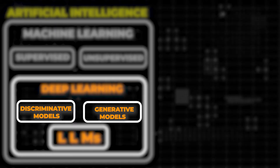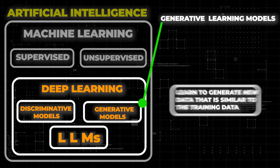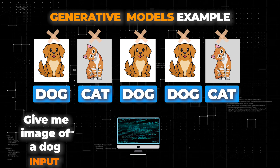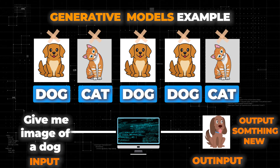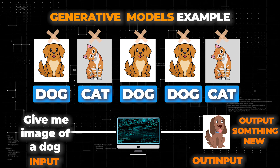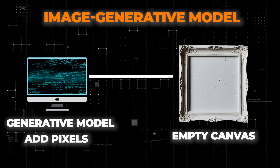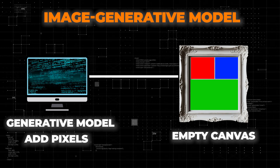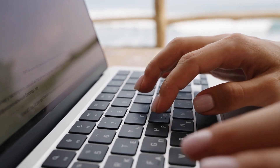Generative models are the opposite of discriminative models. Instead of learning to classify data, they learn to generate new data that is similar to the training data. For example, a generative model might learn to generate images that look like cats and dogs, based on the features it learned from the training data. Generative models utilize sampling to create fresh data. For instance, an image generative model could begin with an empty canvas and gradually add pixels using the learned features from the training data. It may randomly assign colors to each pixel, just like words to images.